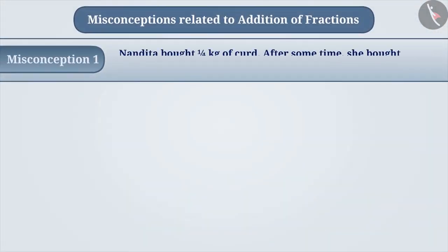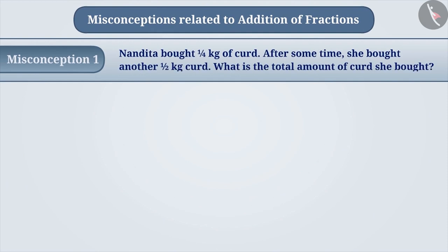Misconception 1: Nandita bought 1/4 kg of curd. After some time, she bought another 1/2 kg of curd. What is the total amount of curd that she bought?